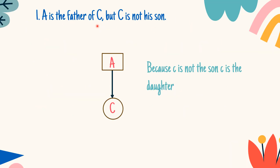The first line says that A is the father of C but C is not his son. This only indicates one thing — that C is the daughter of A, because she is not the son of A.